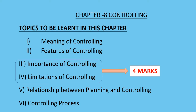Meaning and features have already been completed in the previous session. Now, importance of controlling will come for a four marker and limitations of controlling will also come for a four marker. Importance of controlling can come as an eight marker too because there are six points — one mark for the introduction and another for the conclusion. It's always better you study importance and limitations of controlling as a four marker, but you should study all six points.